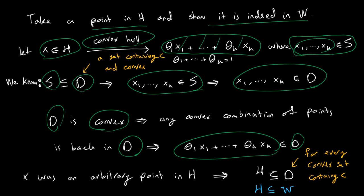So I started with an arbitrary point x in H and showed that point is in d. It doesn't matter which point I take — x was an arbitrary point in H, and I showed it lands in an arbitrary set d that is convex and contains S. This means x is in every such d, so x is in the intersection of all such d sets, which is the definition of W. Therefore the first inclusion H ⊆ W is true.